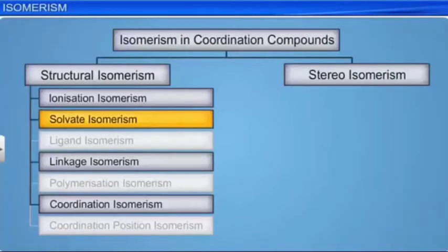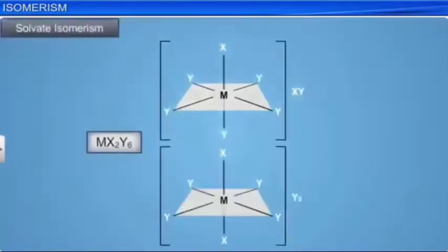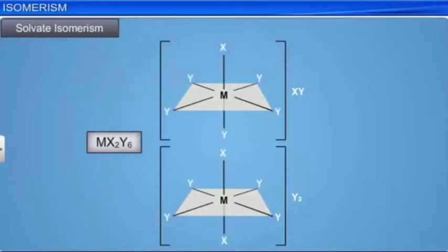Let us now look at solvate isomerism, which is similar to ionization isomerism. This form of isomerism is known as hydrate isomerism if water is involved as a solvent. Compounds that have the same composition but differ by whether or not solvent molecules are present as ligands in the coordination sphere, or are merely present as free solvent molecules outside the coordination sphere, are known as solvate isomers.